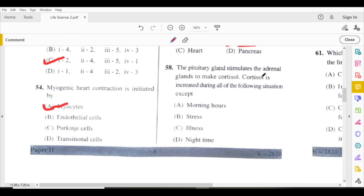Pituitary gland stimulates the adrenal glands to make cortisol. Cortisol is increased during all of the following situations except night time. At the end of the day, it decreases.